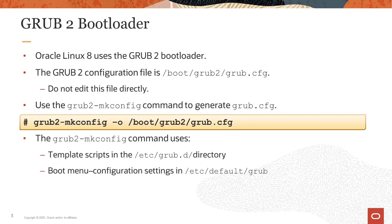Grub2 is the bootloader used by Oracle Linux 8. Grub2 is a product of the GNU project and conforms to the multi-boot specification, which allows it to load many free operating systems directly, as well as to chain load proprietary operating systems. Grub2 understands file systems and kernel executable formats, allowing it to load the operating system without recording the physical position of the kernel on the disk. The kernel can just load by specifying its file name and the drive and partition where the kernel resides.